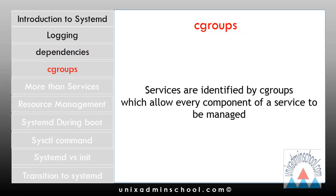systemd services are identified by cgroups, which allow every component of a service to be managed. For example, the older System 5 init scripts would start a service by launching a process which itself might start other child processes. When the service was killed it was hoped that the parent process would do the right thing and kill all of its children. By using cgroups, all components of a service have a track that can be used to make sure that all of those components are properly started or stopped.